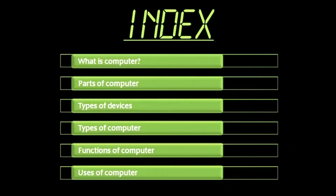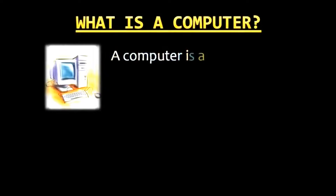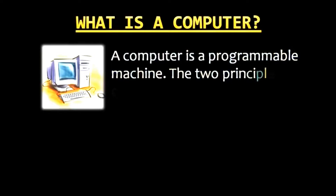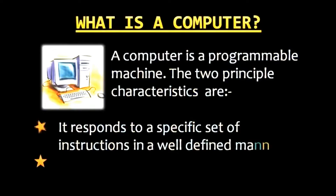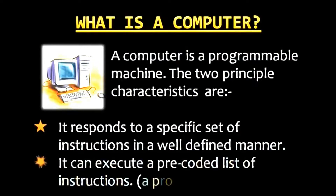What is a computer? A computer is a programmable machine. It responds to a specific set of instructions in a well-defined manner, and can execute a pre-recorded sequence of instructions.